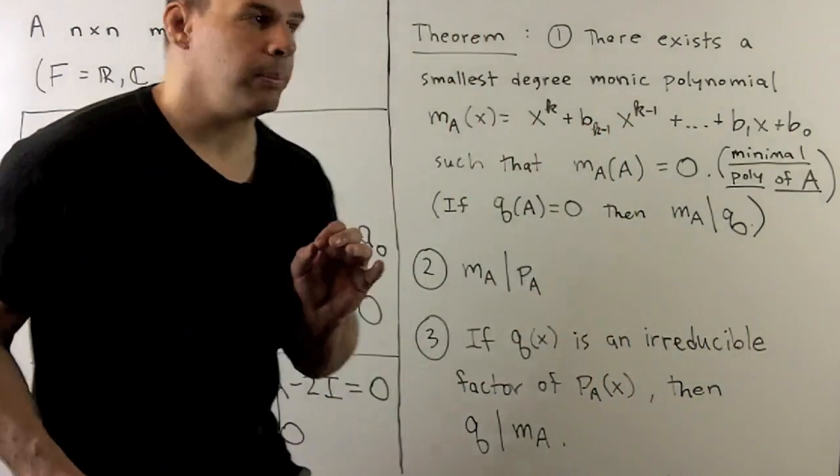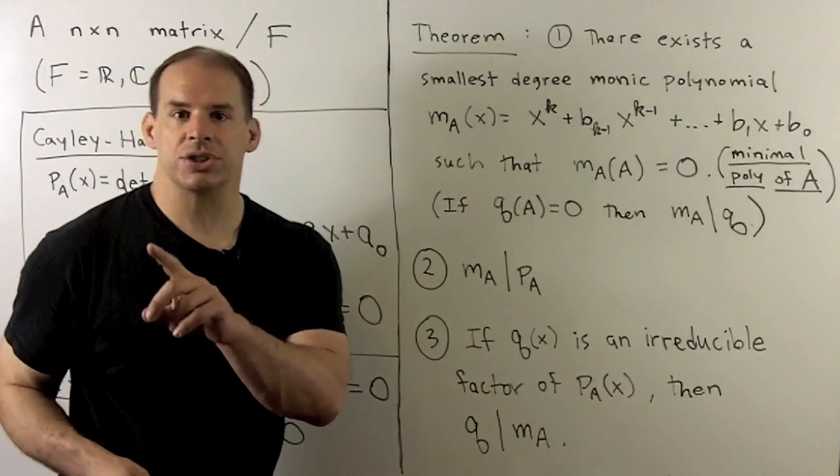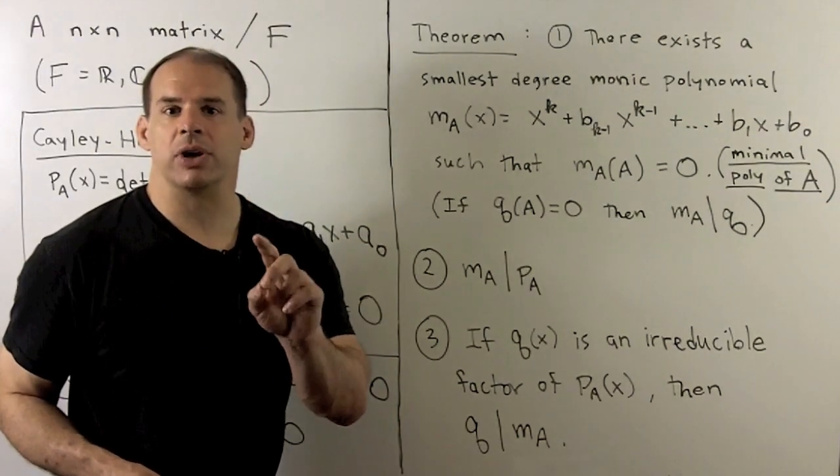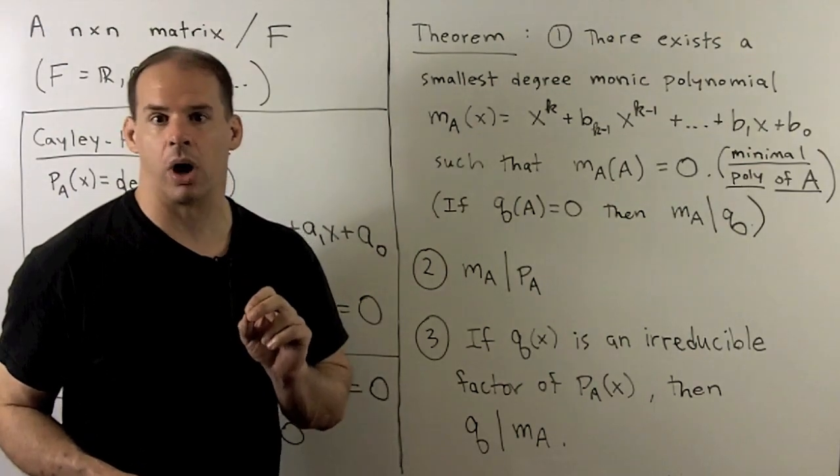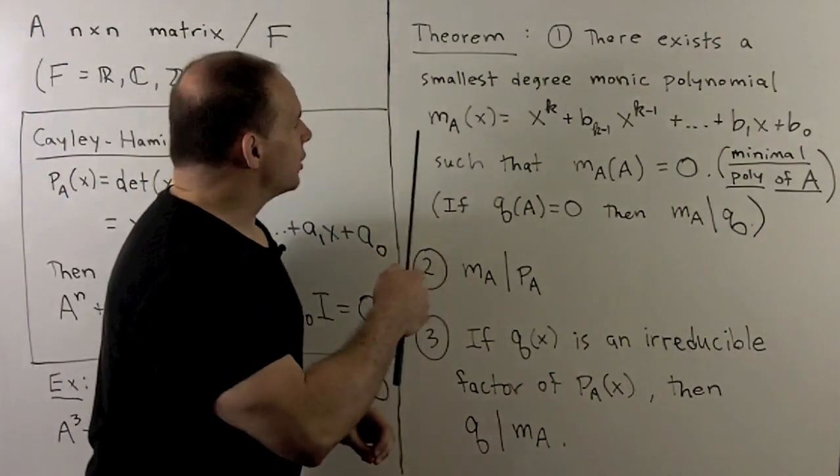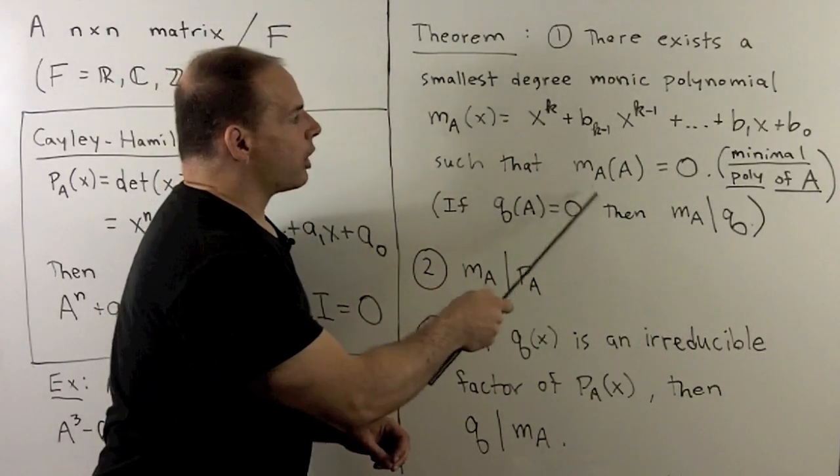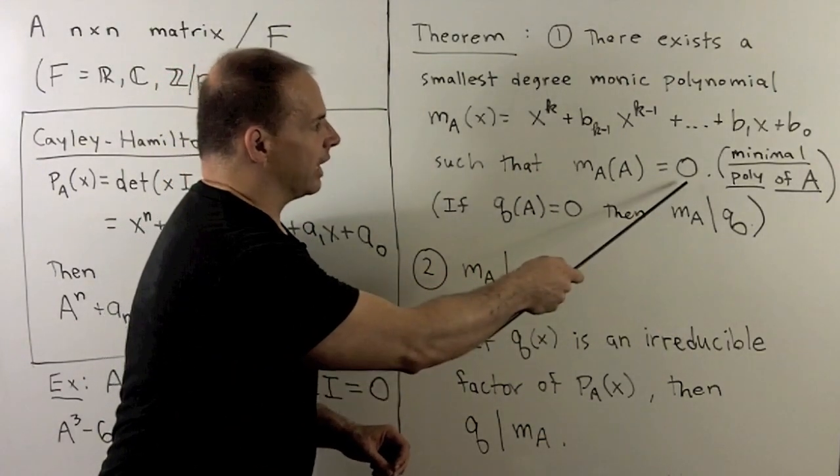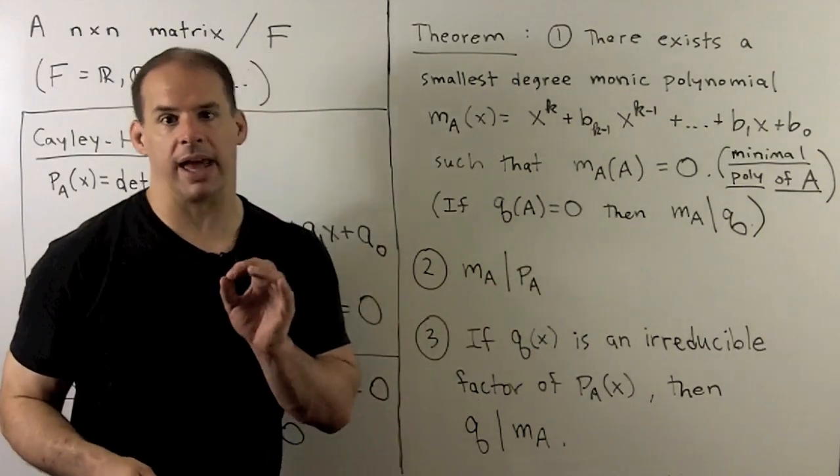Now, our main result is the theorem. First, there exists a smallest degree monic polynomial (monic just means leading coefficient one) in this form, such that M_A on our matrix A is equal to the zero matrix. And this M_A is what we're calling the minimal polynomial of A.